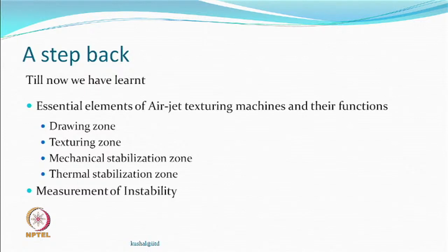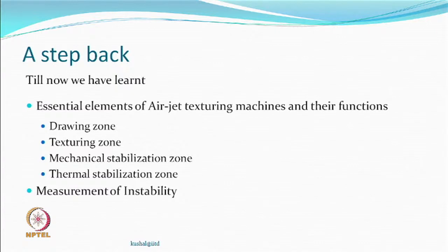We continue on air jet texturing. What we have learnt so far includes the essential elements and their functions in an air jet texturing machine: the drawing zone, which is a sequential process before yarn enters the texturing zone, particularly when POY or undrawn yarns are used as raw material; the texturing zone where entanglements occur; the mechanical stabilization zone where loose loops tighten; and the thermal stabilization zone which helps reduce instability in thermoplastic fibers. We also learnt about the measurement of instability.